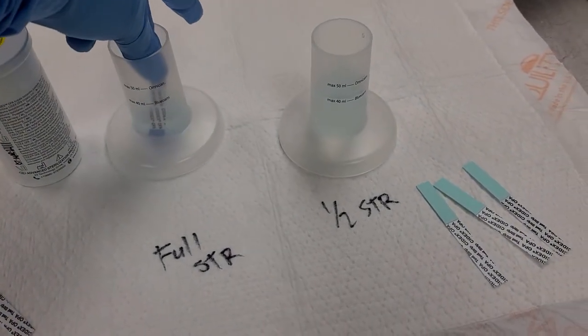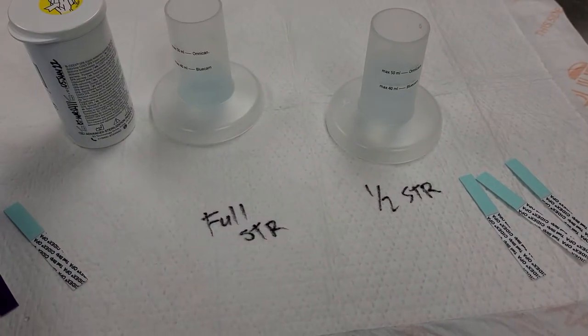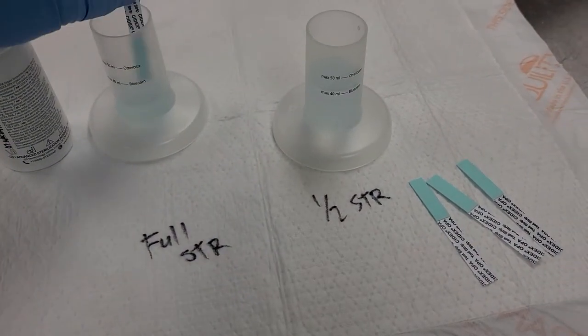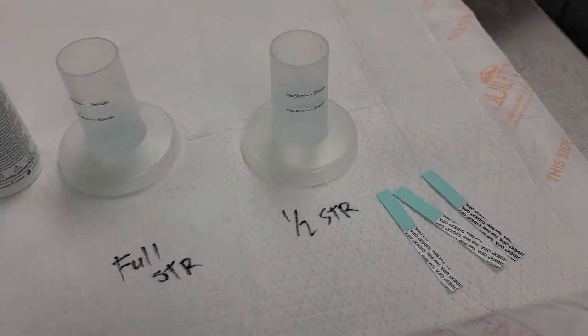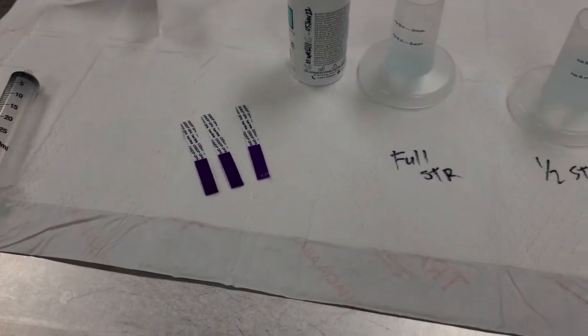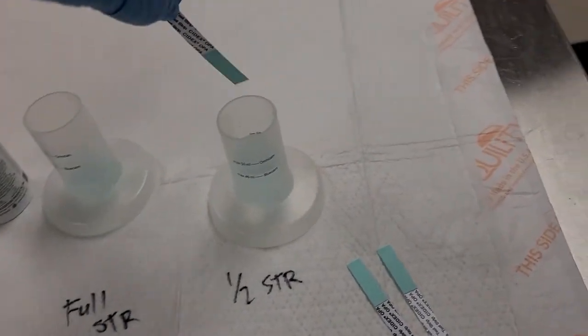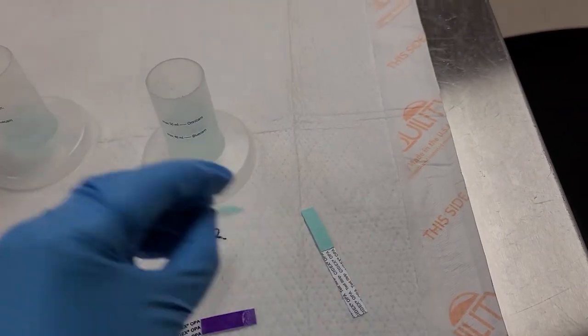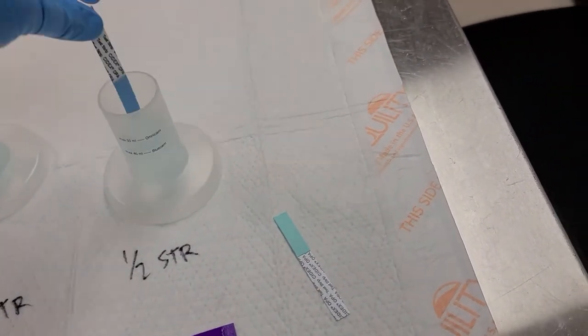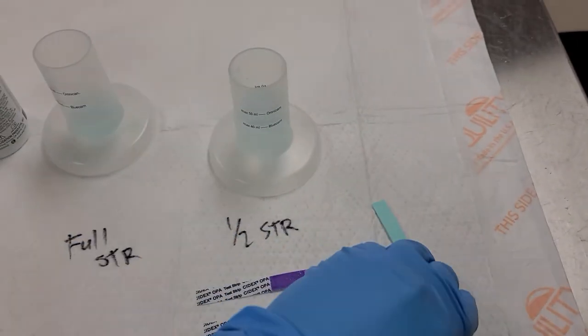So three for the full strength. And you're going to let them sit for 90 seconds. So full strength, it should turn purple. Now the half strength should have a bit of color change, but it should not be as brilliant and it will definitely go back to blue after the 90 seconds.